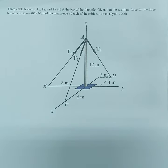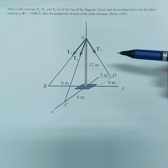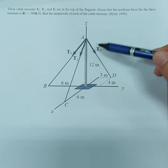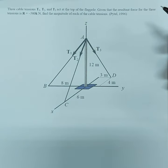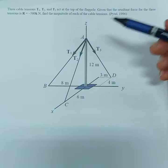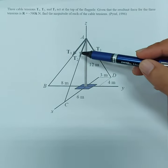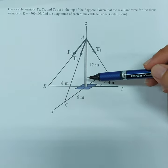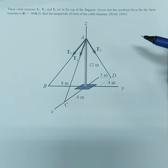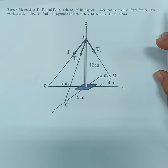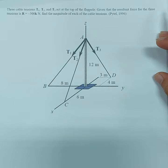We can solve this using our strategy from the previous example. But first you have to identify the angles. We can solve for the components along x, y, z of the three tensions using trigonometry if we can solve for the angles given the dimensions of the cables. But for this problem, it is best to use vector algebra.